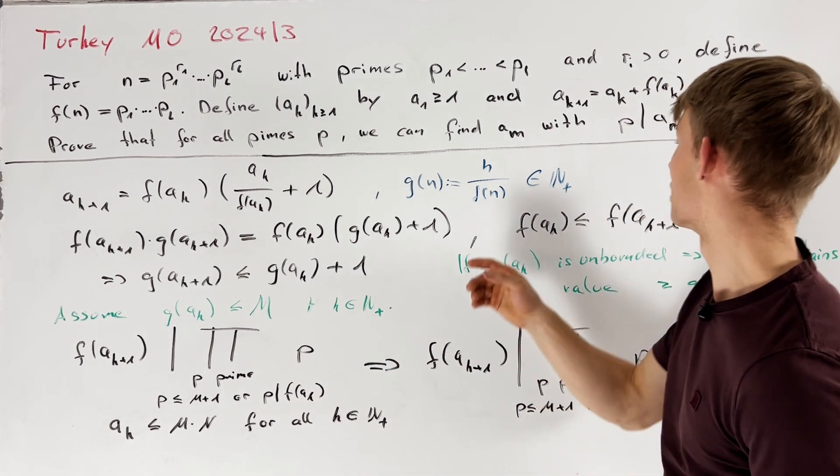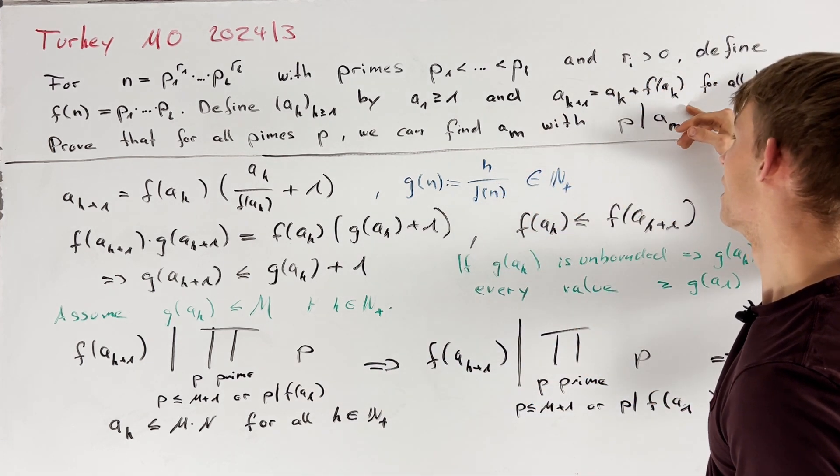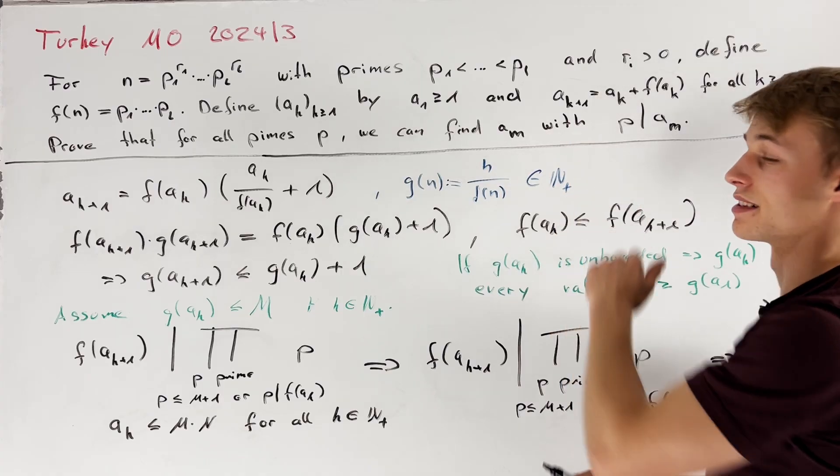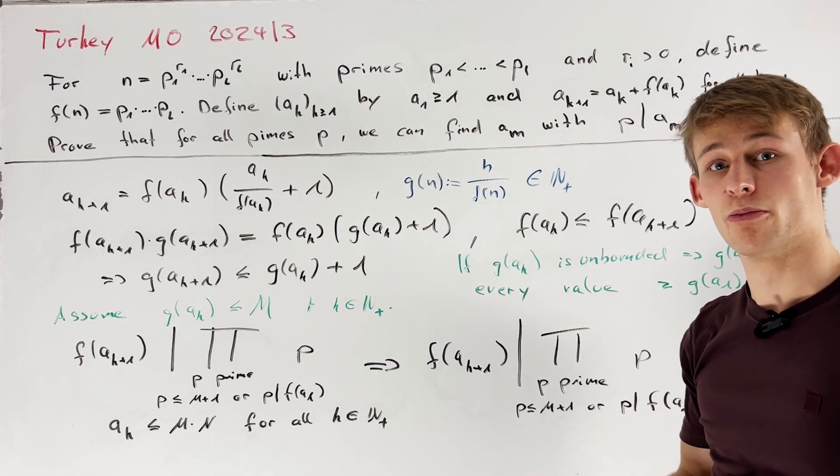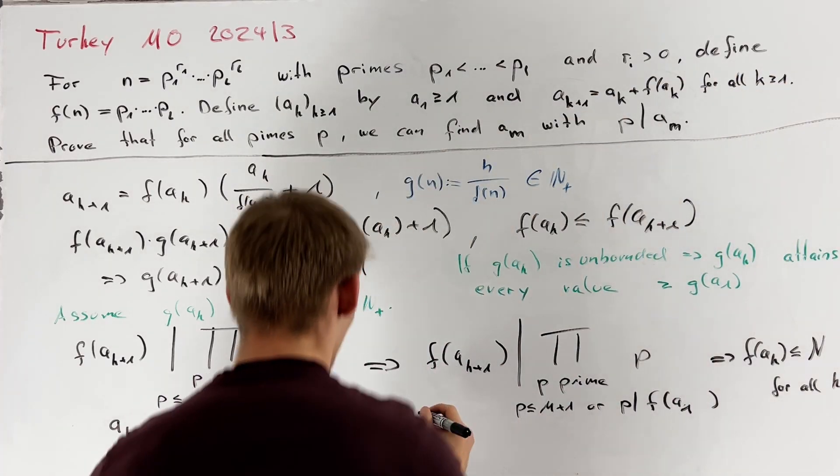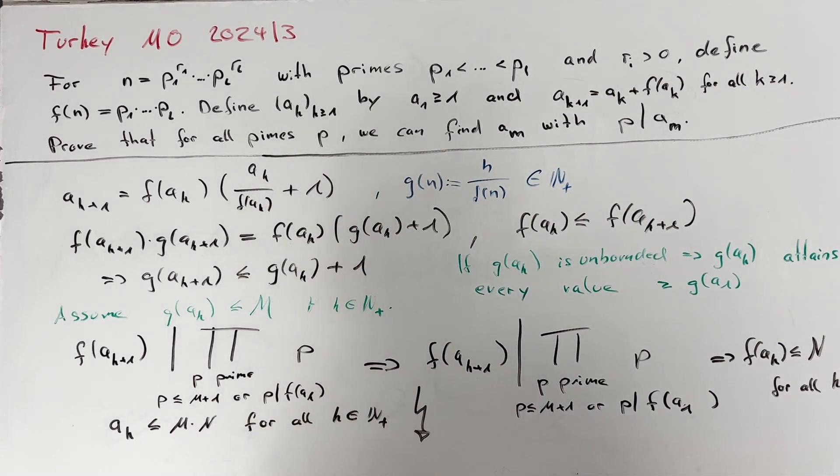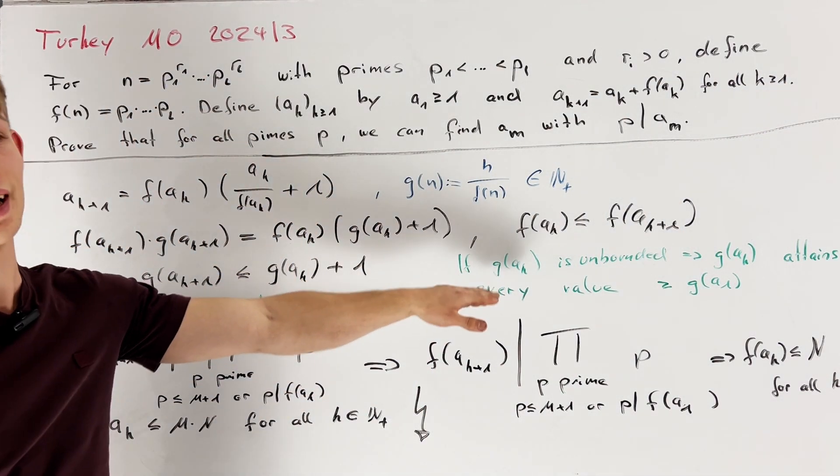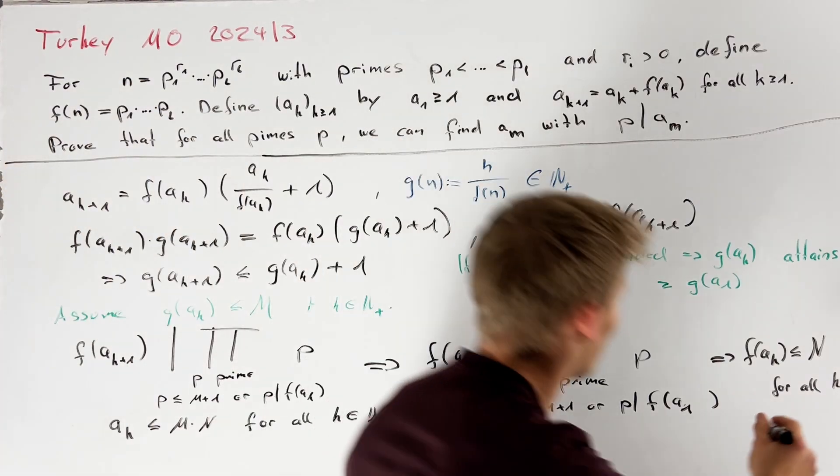But on the other hand if we take a look at the recursive formula then we see that a_k is strictly increasing. Moreover we know that a_k is a sequence of integers and therefore this is clearly a contradiction. Hence we have proven that g of a_k is indeed unbounded and therefore we are done.